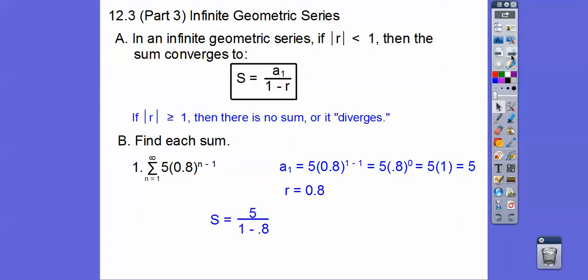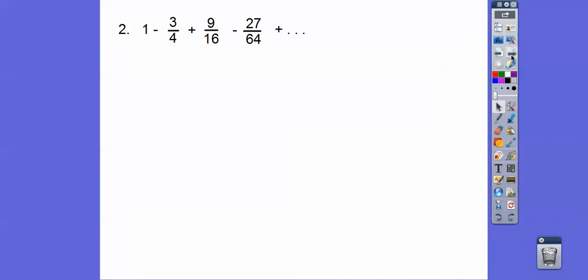All right, so there's r, and then plug it in. So 1 minus 0.8 is 0.2. So 5 divided by 0.2 is 25. Told you, it's easy.